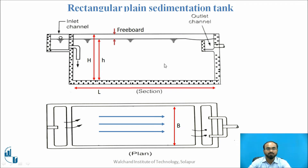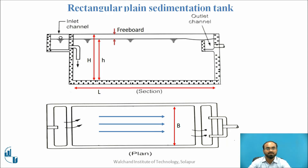Let us have a few diagrams for the plain sedimentation tank. Water is coming from the inlet channel, going into the tank, and passing through length L which has an effective height small h. When we add the freeboard, we get capital H as the total height of the tank. After a particular detention time, water is collected in the outlet channel. Suspended particles settle at the bottom, and a slope of 1 in 100 is given at the bottom so that collected particles can be taken out.